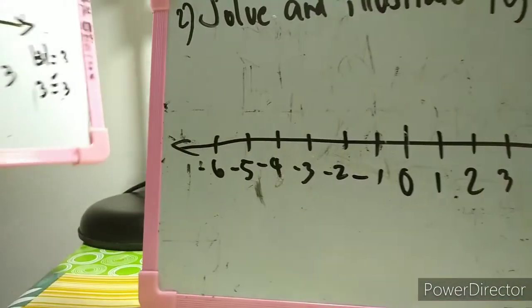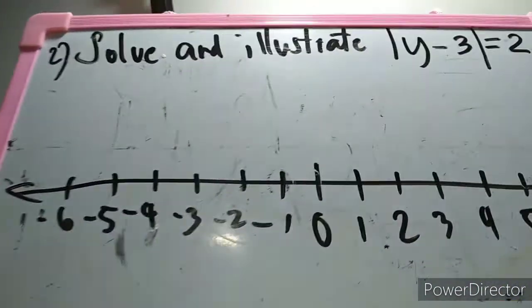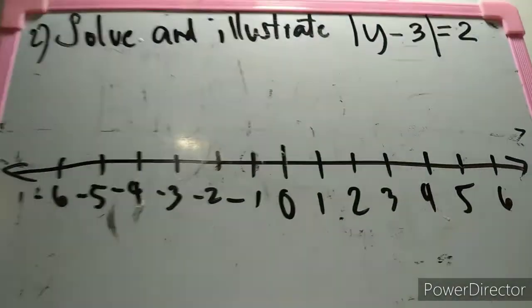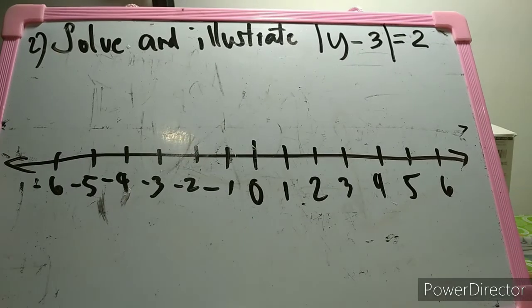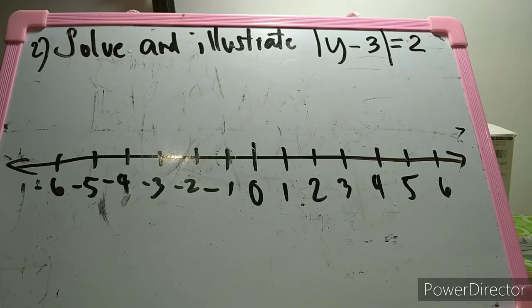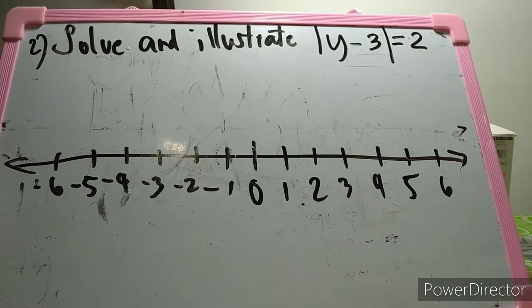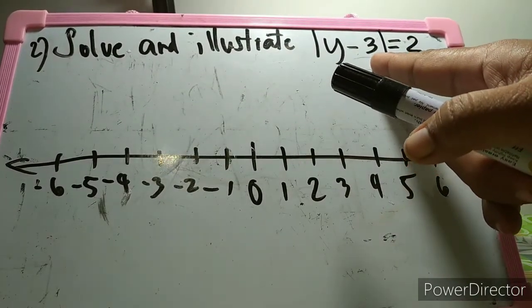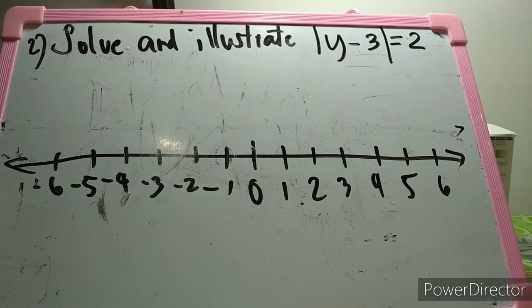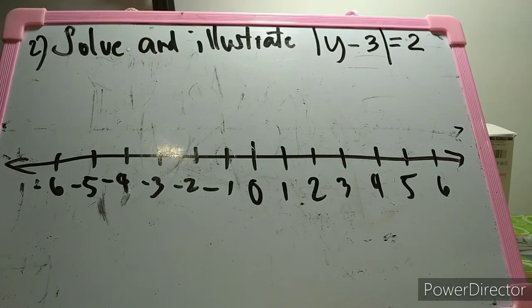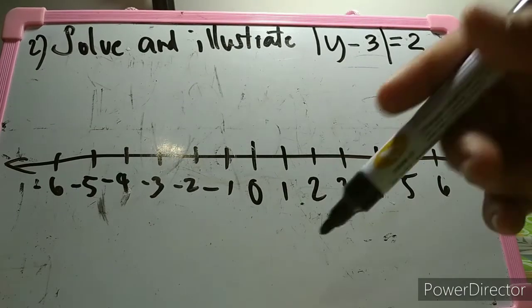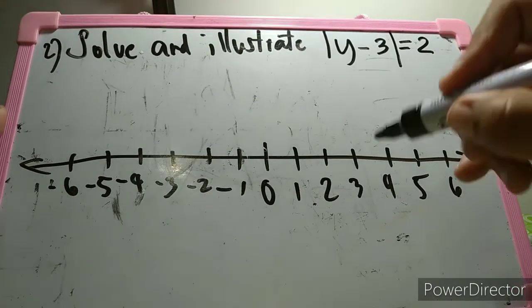Another example: solve and illustrate the absolute value of y minus 3 equals 2 using the number line. To find the solution, y must be a number whose distance from 3 is 2.